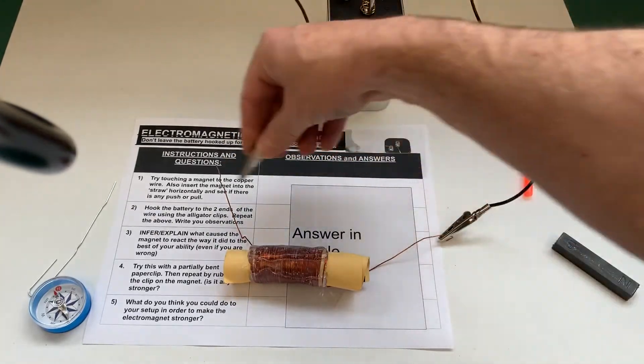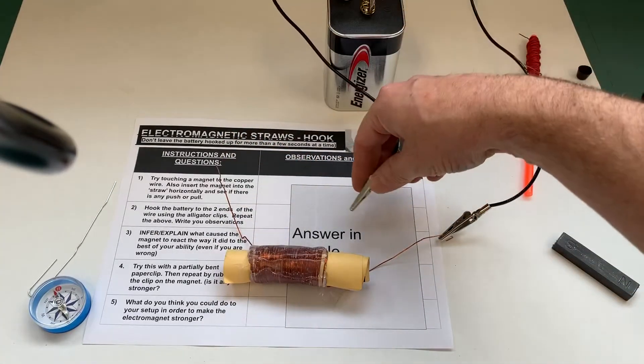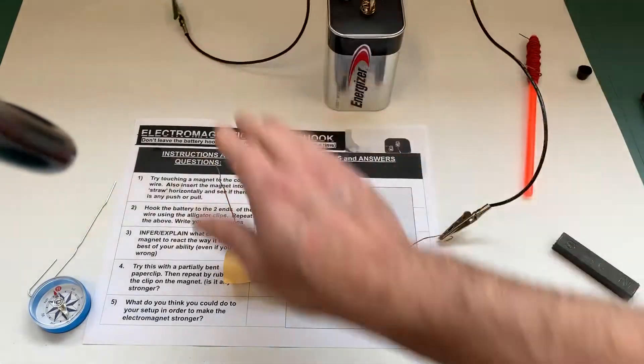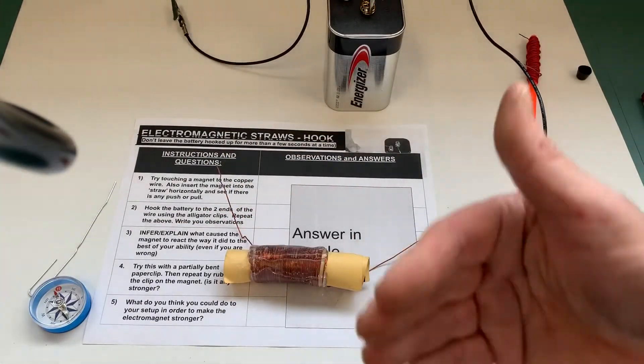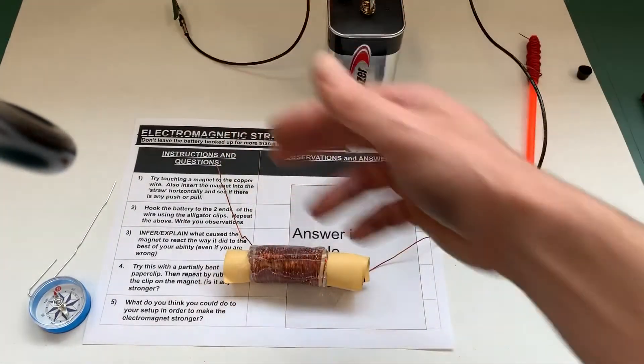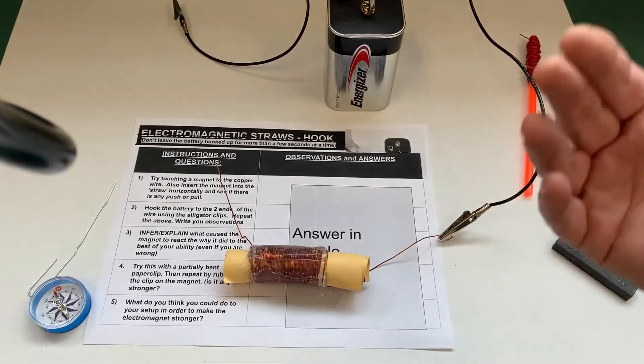Just connect the alligator clip. Make sure these do not touch each other across this way. This may get a little bit warm also so you don't want to leave these hooked up for very long. So when you do the next part of the experiment it has to be pretty quick.